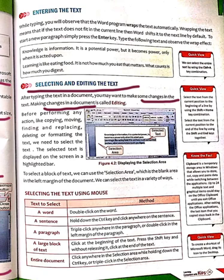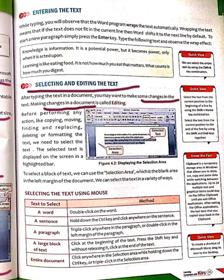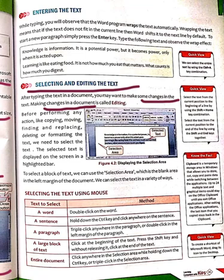Before performing any action, if we need to select the text, we need to select it. If you have to move, copy, or delete something, we have to select that text first. Then we can make some changes and perform some action on the selected text.